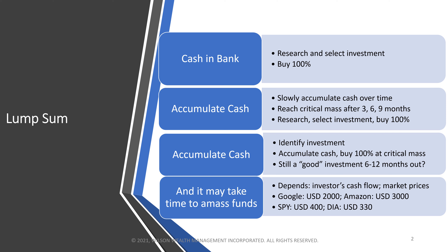In the third option, we identify an investment up front — we really like Apple or Facebook — and we say we're going to need $5,000 to properly invest. Then we slowly accumulate the cash, and when we hit that critical mass we buy the shares. The difficulty is that if it takes you six to twelve months to accumulate the capital, you need to reassess whether that is still a good investment versus what the market is doing a year out, what competitors are doing, or what other options are available in different asset classes that might provide a better return.